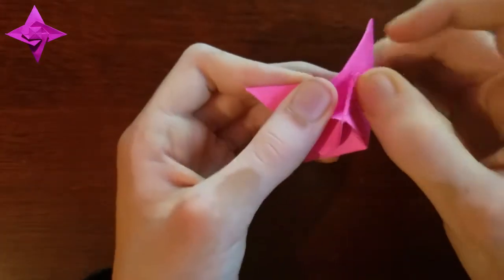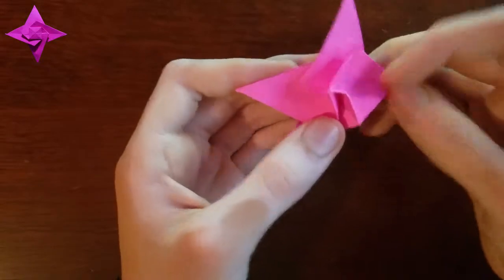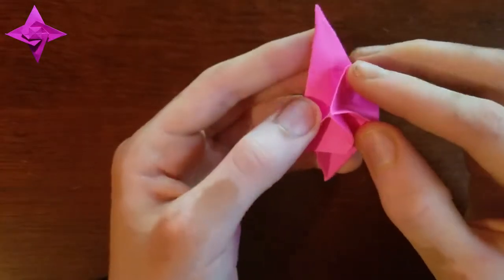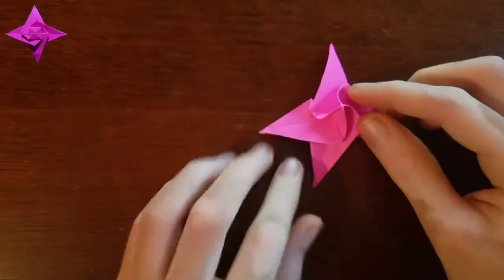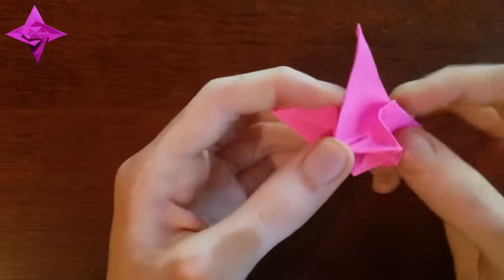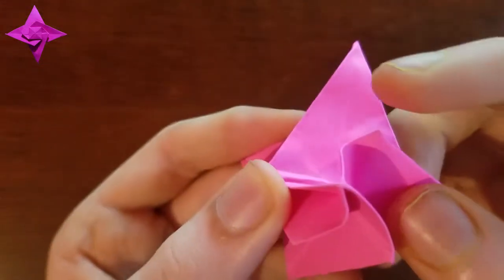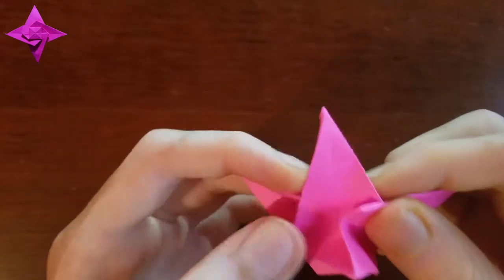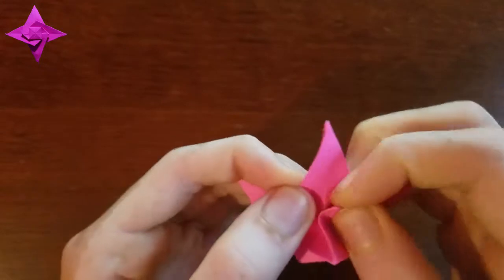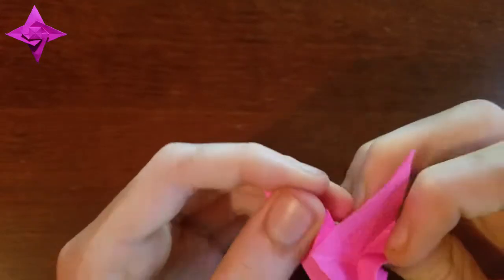Same here, we're gonna flip it this way. We're not making any creases yet, we're just bending it, so you kind of see how it's twisting. What we're gonna do is make this corner go on that middle crease, make it just sit right on there.